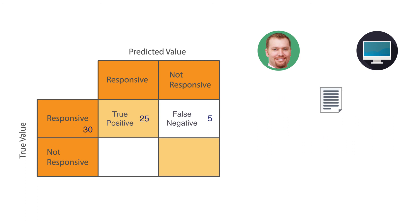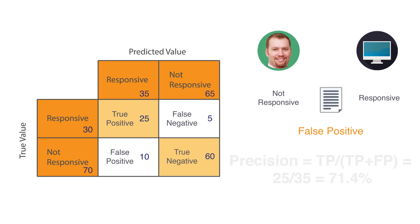For this example, let's look at another document. This document has a true value of not responsive. However, the machine predicted this document as responsive. This is a false positive. Let's say there are 10 false positives — we will fill out 10 in the false positive quadrant. Just to complete the matrix, we now have 40 out of the 100 documents already accounted for, so we know there are 60 documents in the true negatives quadrant. To get precision, you take the true positives and divide by the true positives plus false positives. So here, that is 25 over 35, or 71.4%. This measure is important because in legal search, documents predicted as responsive through TAR might undergo some sort of manual attorney review. Thus, a low precision score can result in a high number of false positives being reviewed, and that can be costly.